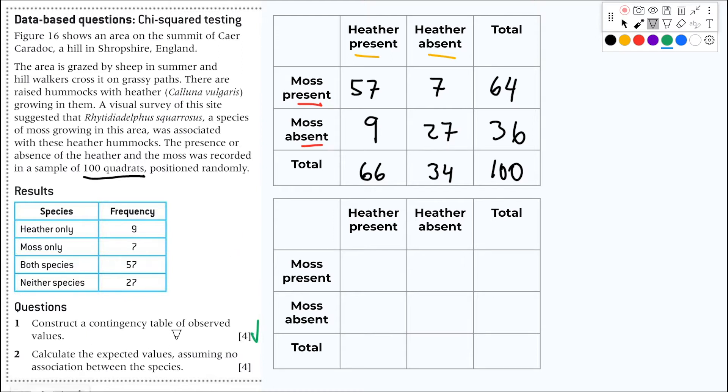Now, calculate the expected values, assuming no association between the species. You say, well, no association, I would expect 25, 25, 25, 25, because it's 100, and I just distribute here, my job is done. Not really. And why is that? Because I have to have 64, I need 64 quadrants with moss, because that is what I observed. This is the number of moss, quadrants with moss that there are.